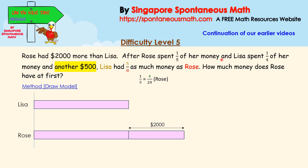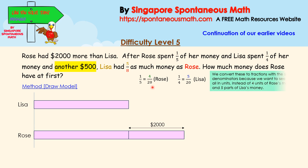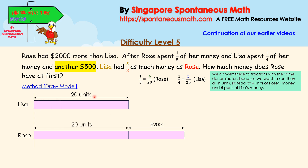Rose spent one-fifth of her money and Lisa spent one-quarter plus another $500. The reason why we convert these two to the same denominators is because we want to see these two portions as equivalent units, instead of having four units of Rose's money and five parts of Lisa's money. So now we have 20 units and 20 units.